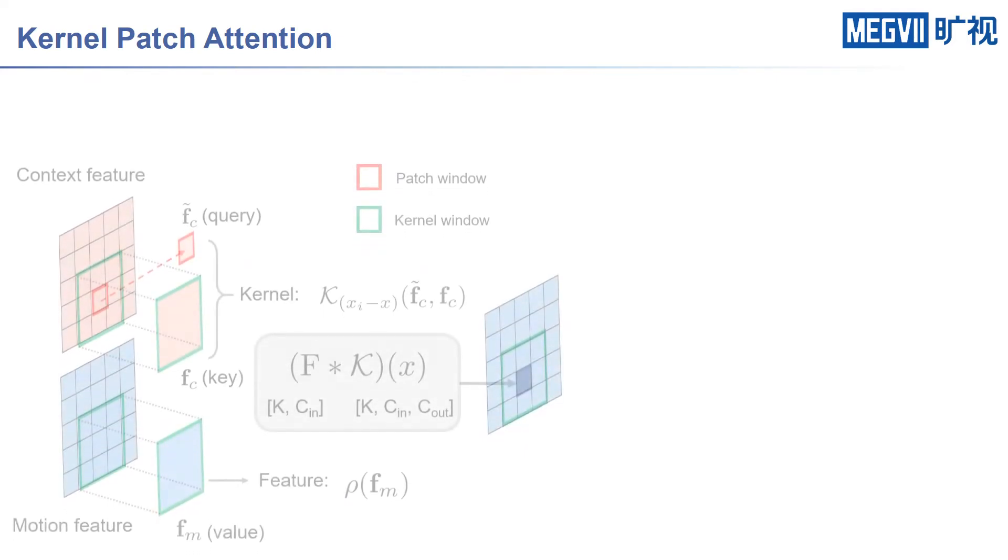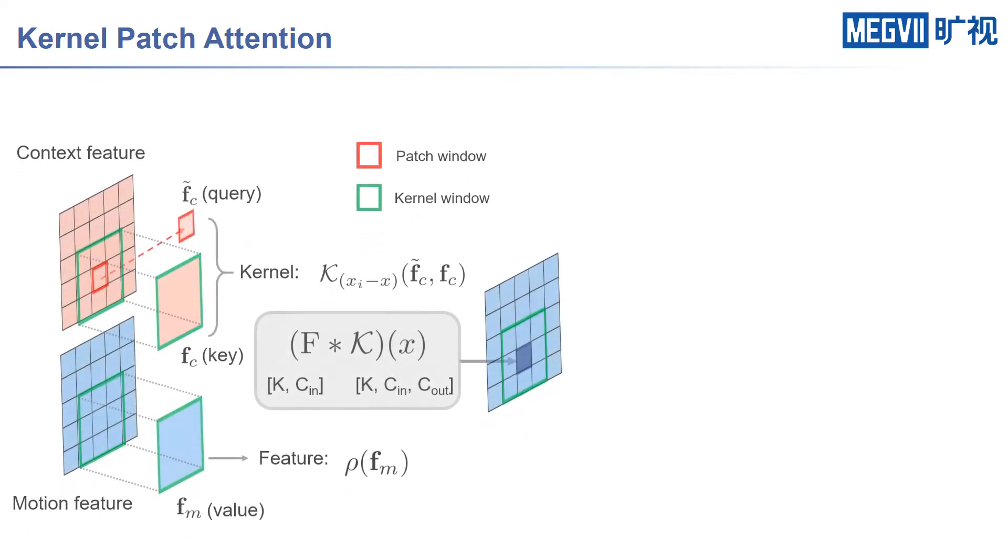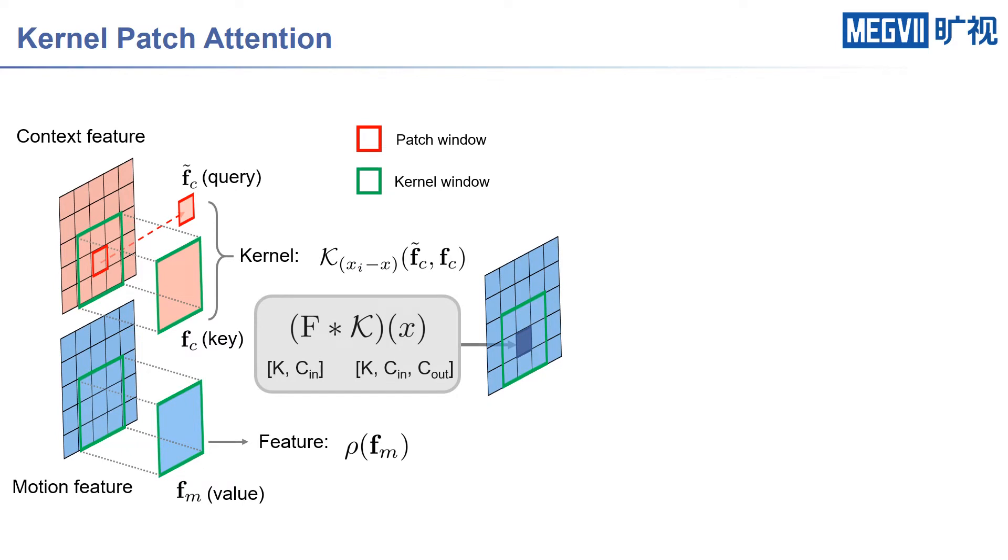Here we provide an illustration of our KPA module. We first divide the context feature and motion feature into non-overlapped patches. The red rectangle indicates a patch window and the green one denotes a kernel window. The kernel matrix can be obtained by performing the matrix multiplication on Fc-tilde and Fc. Then we apply the convolutional operation on Rho-Fm with the obtained kernel matrix to get the updated motion feature in the corresponding patch window.